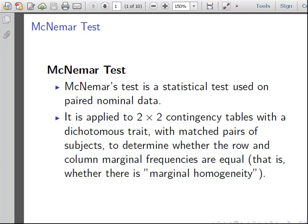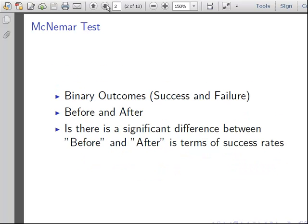In this presentation we are going to look at the McNemar test, and it is a test used on paired nominal data, and it is applied to 2x2 contingency tables for a dichotomous trait. This is the formal definition, I will come to the proper short version in a second, with matched pairs of subjects to determine whether or not the row and column marginal frequencies are equal. But that is a bit tough to take in, so essentially what we have here is binary outcomes, success and failure.